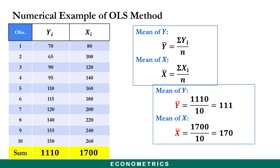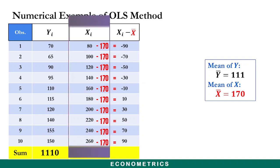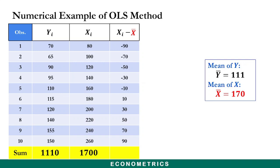We now expand the columns of our table to include the deviation of x, where we take each x value and subtract the mean of x from it. We then sum these values and get the sum of the deviation of x to be zero.